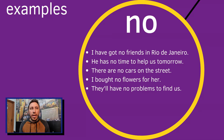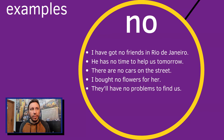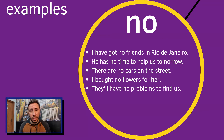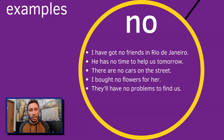The second example: He has no time to help us tomorrow — ele não tem nenhum tempo. Next example: There are no cars on the street. The translation will be in singular in Portuguese — não tem nenhum carro na rua — but in English the sentence is in plural. I bought no flowers for her — eu não comprei nenhuma flor para ela.